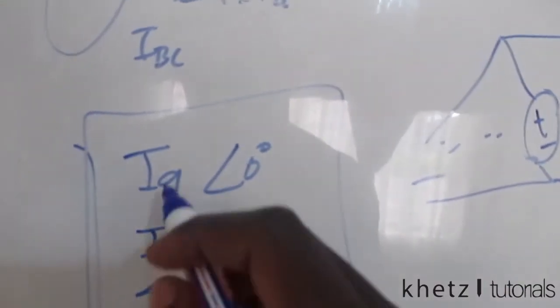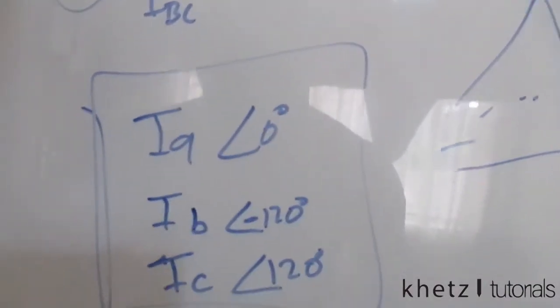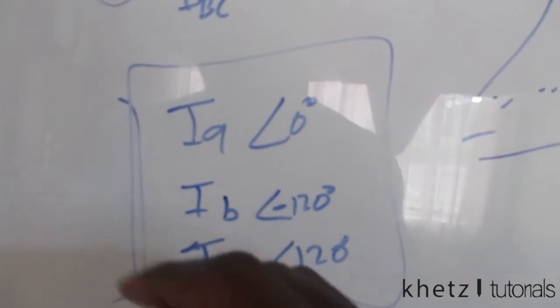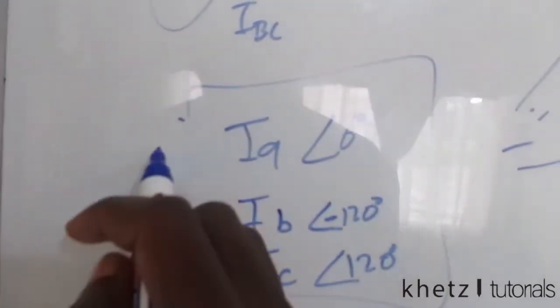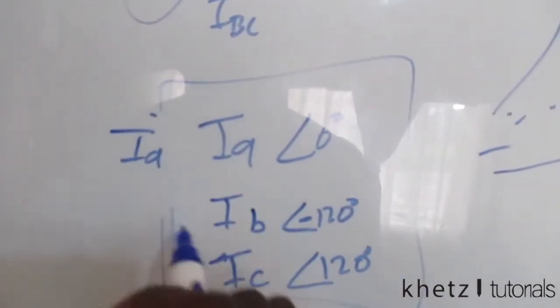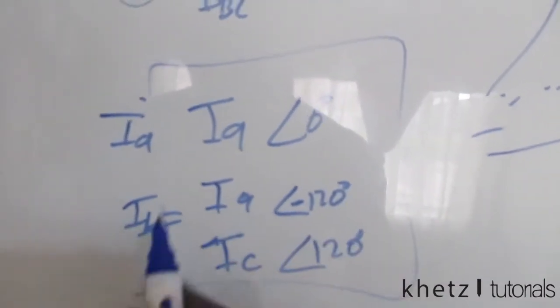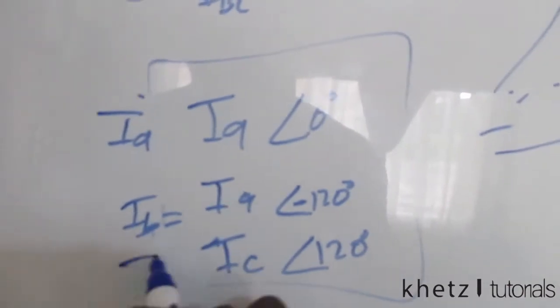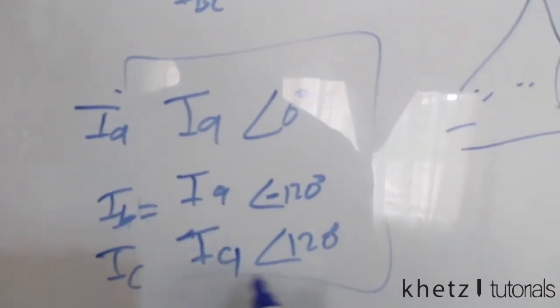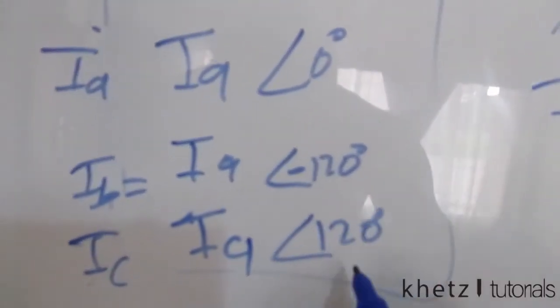After finding our IA, we're just going to use that same magnitude. IB is basically this IA with an angle which is 120 degrees less, and IC is basically IA with an angle which is 120 degrees more.